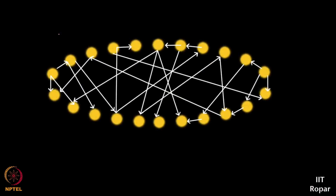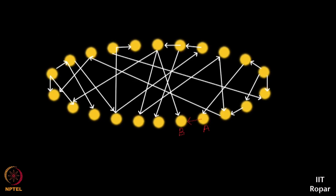I now have what is called a network and my network looks like this. Do you see the nodes here and the edges? Look at this arrow from this node to this node — it just represents that this person found this person impressive.